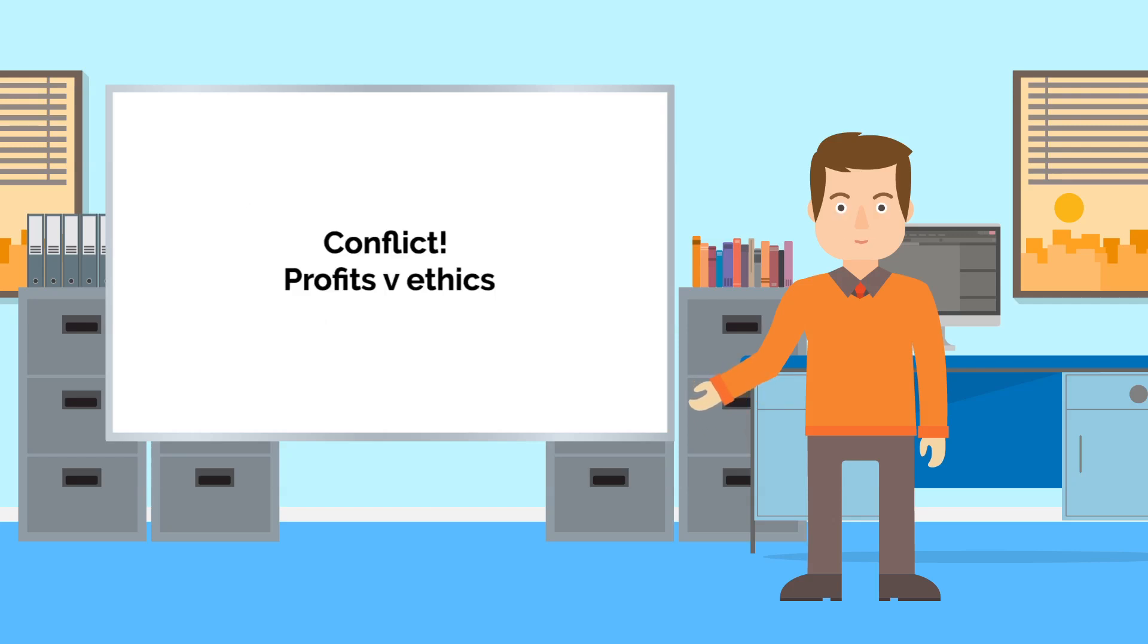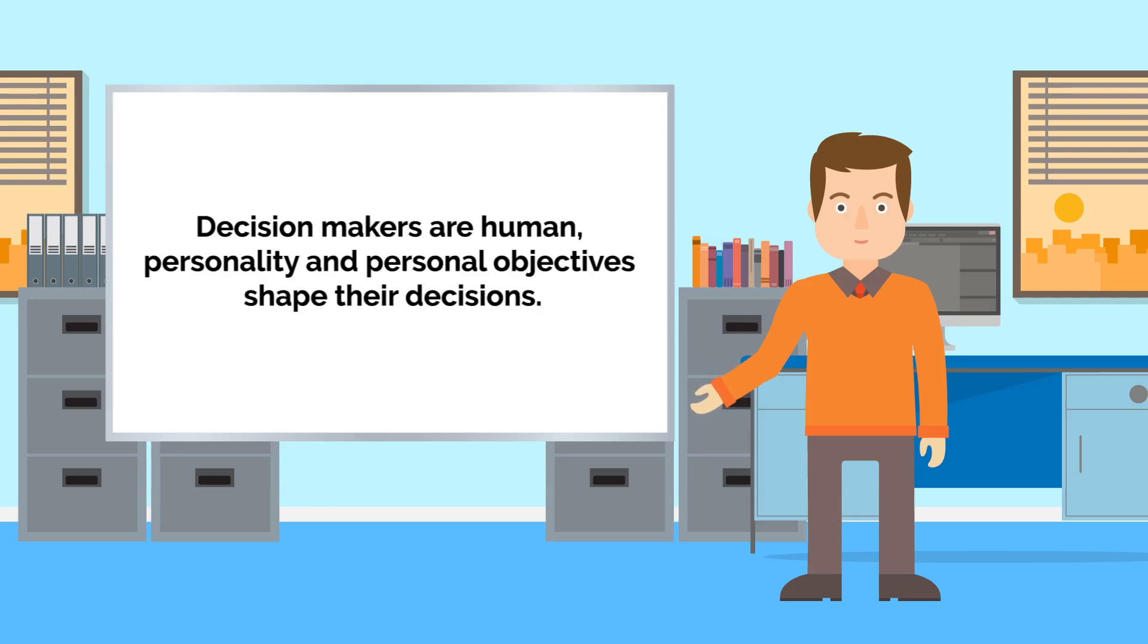Businesses can exist to achieve all of these objectives, even though they might be in conflict with each other. But it is the owners and the managers who make the decisions. Their individual human characteristics, their personalities, guide that process.